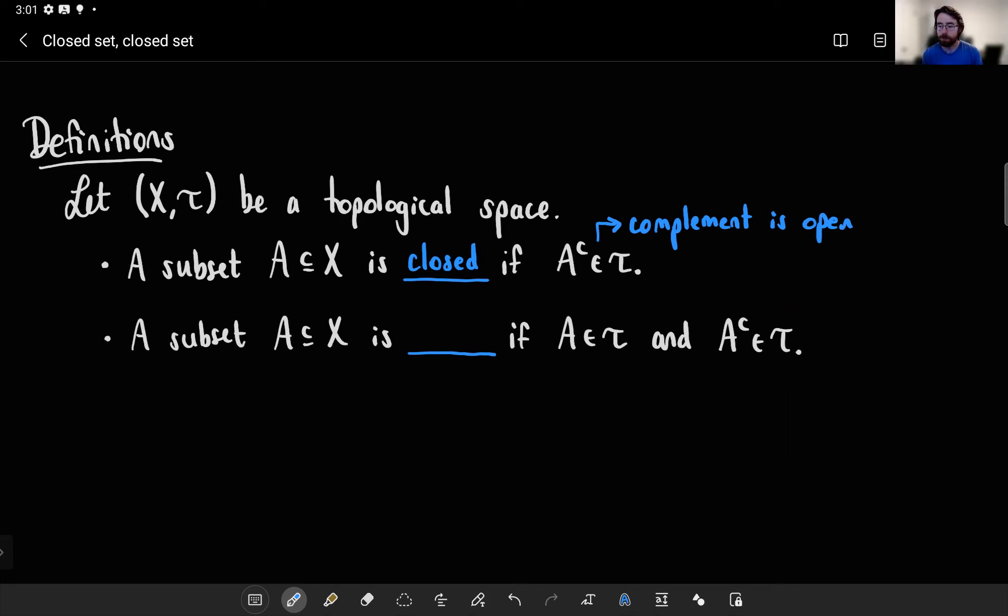And this is a point of confusion for a lot of people when they first learn some topological concepts, because open and closed are not actually the same thing. You would think they were just from your knowledge of the English language. But in fact, while a set could be open and not closed or vice versa, it is entirely possible for some sets to be both closed and open.